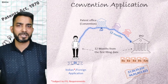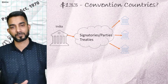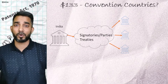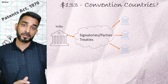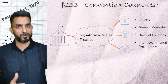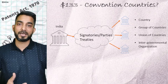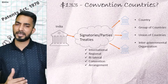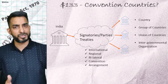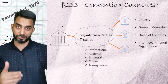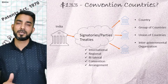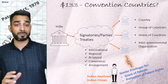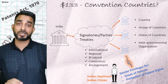Let's start this episode by discussing what convention countries are. As per Section 133, any country which is a party or signatory of a treaty of which India is also a part is called a convention country. It could be a country, group of countries, union of countries, or an intergovernmental organization. As part of these treaties, member countries have agreed to provide similar rights and privileges — with regards to the grant and protection of patents — to citizens of other member countries.